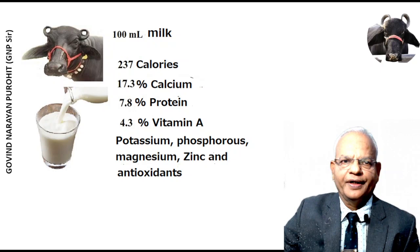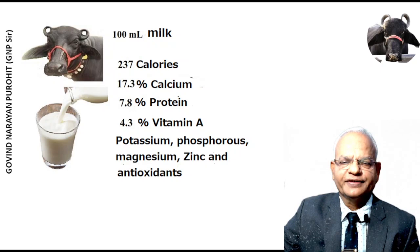Buffalo milk — 100 ml contains 237 calories, 17.3% calcium, 7.8% protein, 4.3% vitamin A, phosphorus, potassium, magnesium, zinc, and many antioxidants. Buffalo milk is preferred for making cheese in many countries, including Italy.